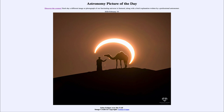Why would we sometimes get an annular eclipse and sometimes a total solar eclipse? The difference depends on the distances between the earth and moon, and between the earth and sun. When you are closer to an object it looks a little bit bigger, and when you're further away it looks smaller. The moon orbits the earth in an elliptical orbit, so sometimes it is closer and sometimes it is further away.